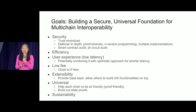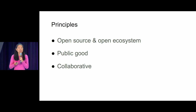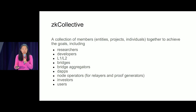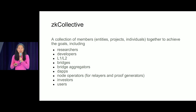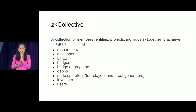The final goal is also to be self-sustainable. There are a few principles for the ZK Collective: one is to enable open source and an open ecosystem, and we hope to bring the community together to build this as a public good and enable collaborative effort among all community members. ZK Collective is a collection of members including different entities, projects, and individuals — researchers, developers, L1 and L2 chains, bridges, bridge aggregators, dApps, node operators serving as relayers and proof generators, investors, and users.